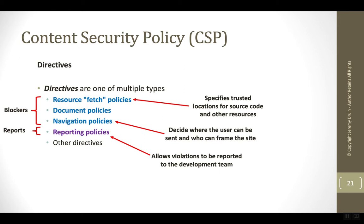The directives come from one of several different categories. Some categories block input coming into the application — the most popular of these is the fetch policies. These all specify valid locations where code or features can originate from, and anything else not on this whitelist is blocked. There are also navigation policies, which decide where the user can be directed from the current application, and document policies that cover documents. One of the most important categories is reporting policies, which allow the browser to send a message back to the development team to alert them if one of the policies was triggered.